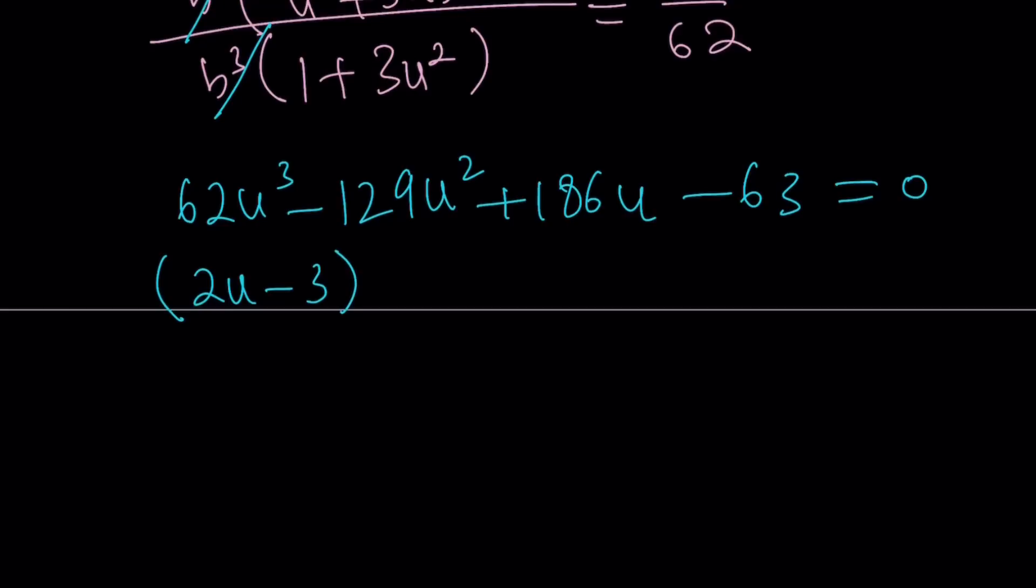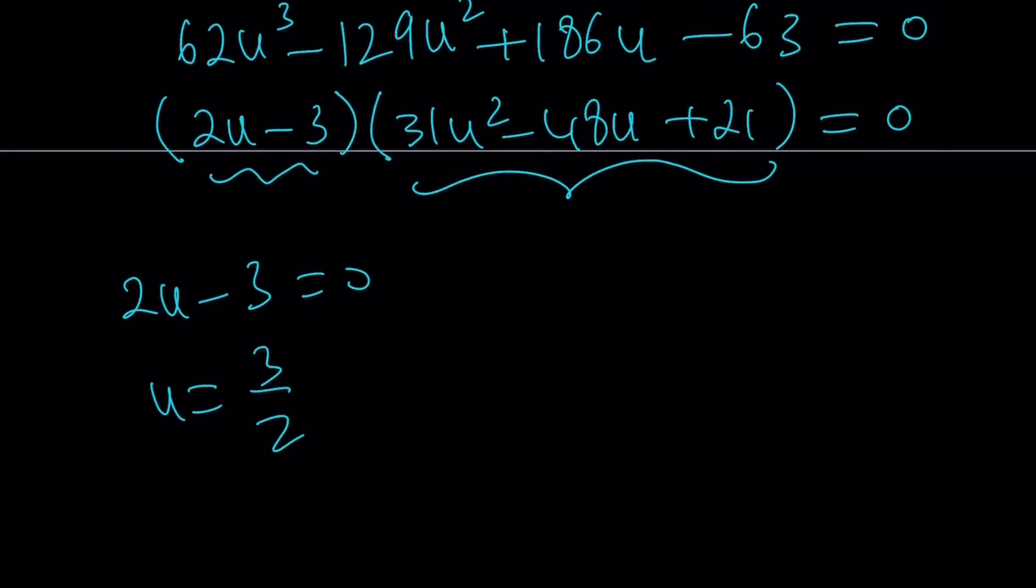But let me again give you the solutions. We have a rational solution, which is three halves. So we can write this as 2U minus 3, 2U, that is the happy birthday song, 31U squared minus 48U plus 21. And the product is equal to zero. Obviously, this is not going to give us any real solutions. So we have to focus on this. Set the 2U minus 3 equal to zero. And you're going to get U equals three halves.